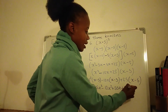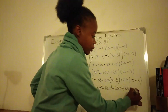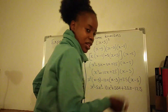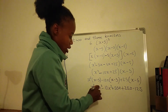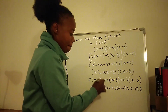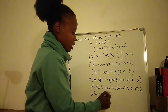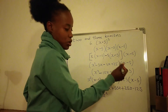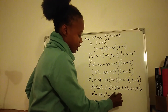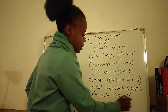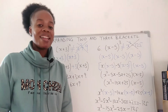Then 25 times x gives 25x, and 25 times negative 5 gives negative 125. After that we collect like terms: x to the power 3, negative 5x squared minus 10x squared gives negative 15x squared, and positive 50x plus 25x gives positive 75x, minus 125. Thank you for watching today's episode on expanding two and three brackets. Don't forget to like, subscribe, and share. Make sure to download a worksheet so that you can practice.